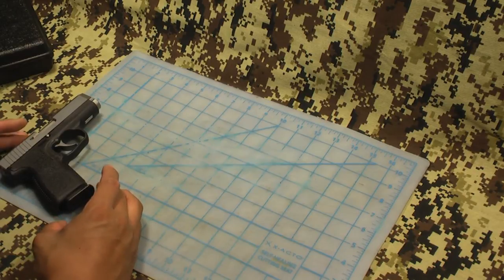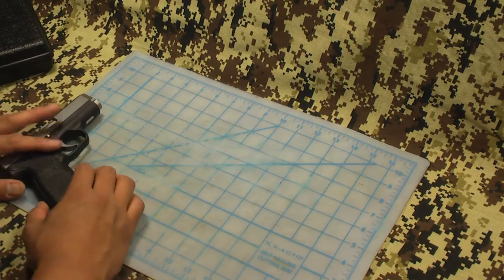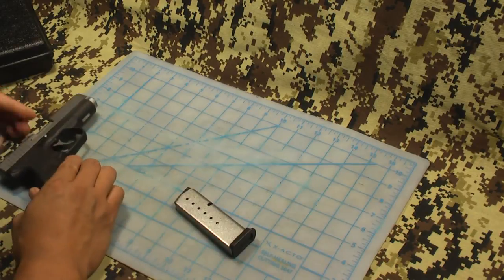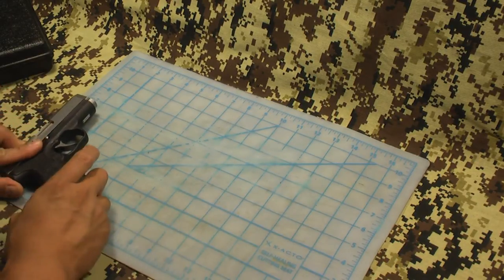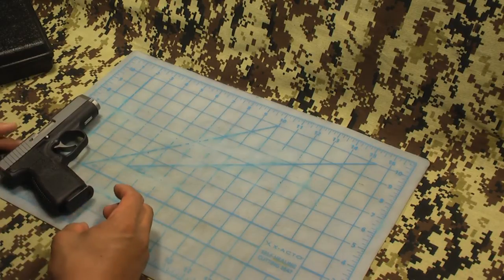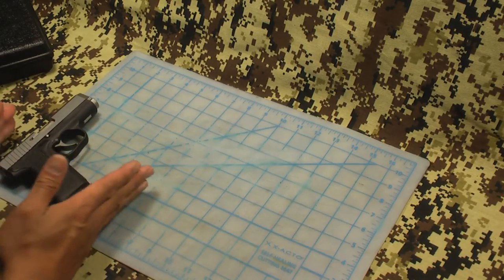With height, including the sights without the magazine, it is 4 and 1/2 inches. Including the magazine base plate, you are looking at almost 5 inches in height.